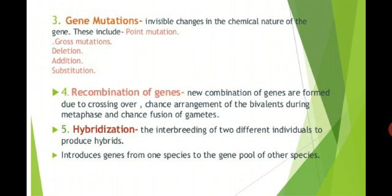The fourth source of genetic variability is recombination of genes. New combinations of genes are formed due to crossing over, chance arrangement of bivalents during metaphase, or the chance fusion of gametes. The fifth source of genetic variability is hybridization.